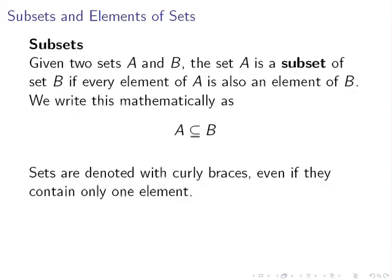I'm just going to come back to that now. Given two sets A and B, the set A is a subset of set B if every element of A is also an element of B. We would write this mathematically as follows: A is a subset of B. That's a subset symbol, and it's distinct from the element symbol used previously.